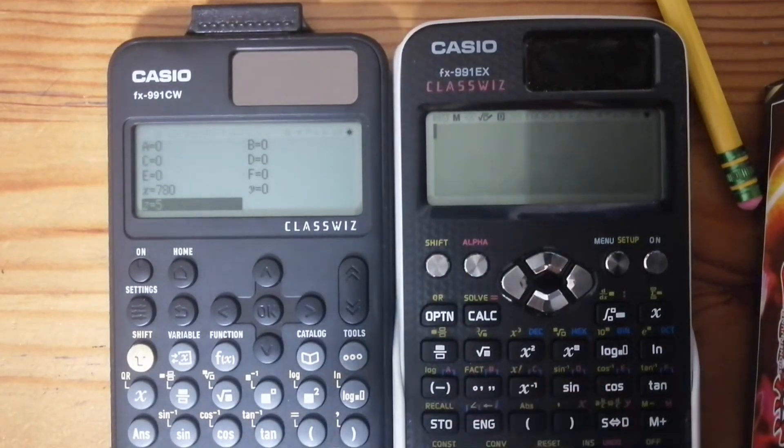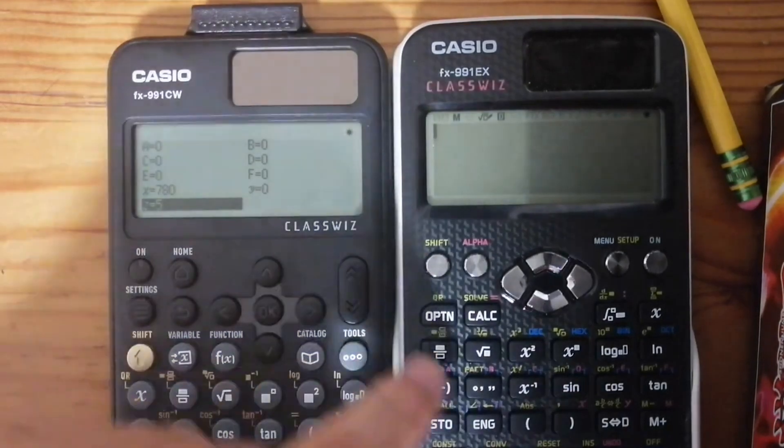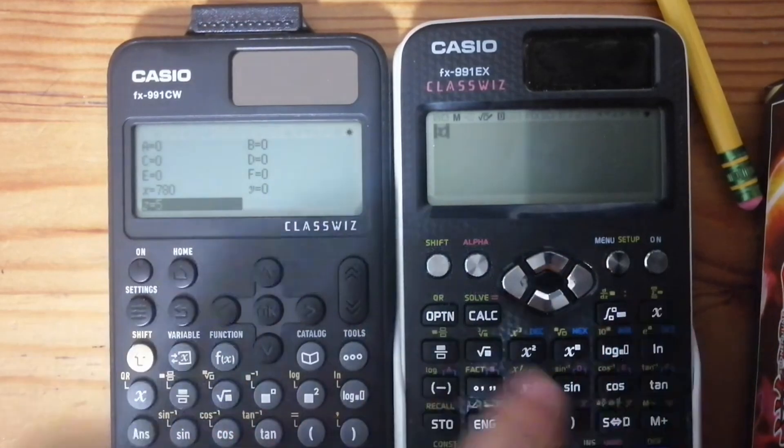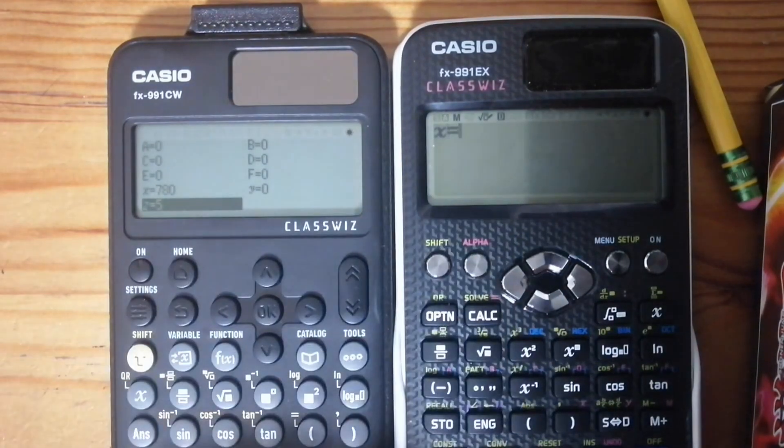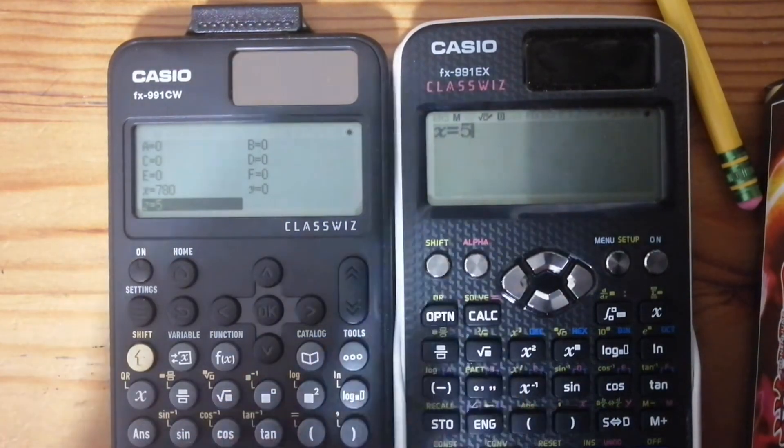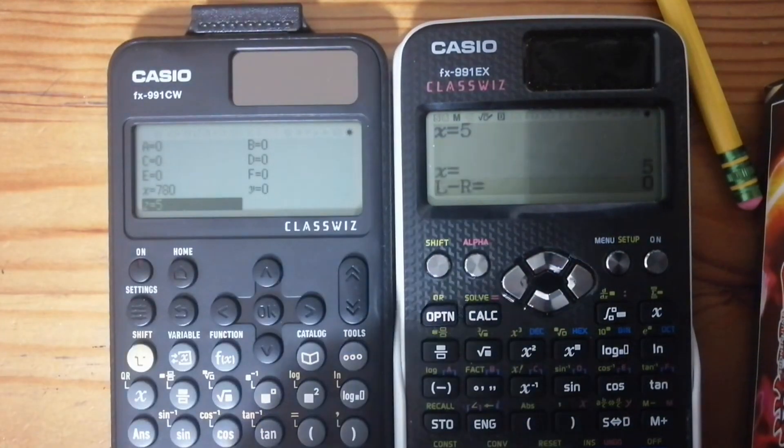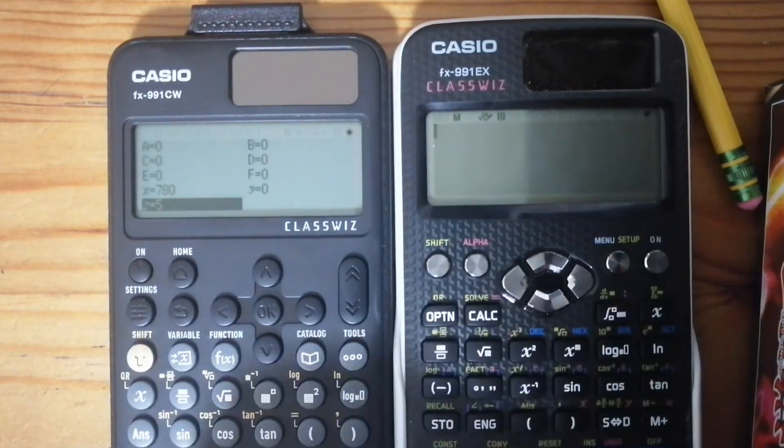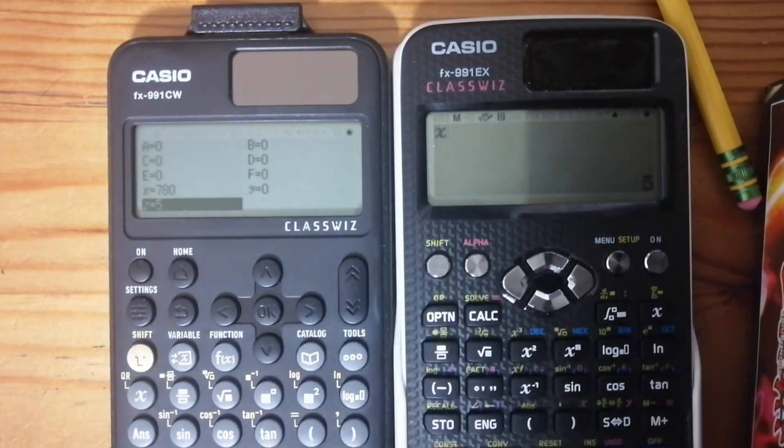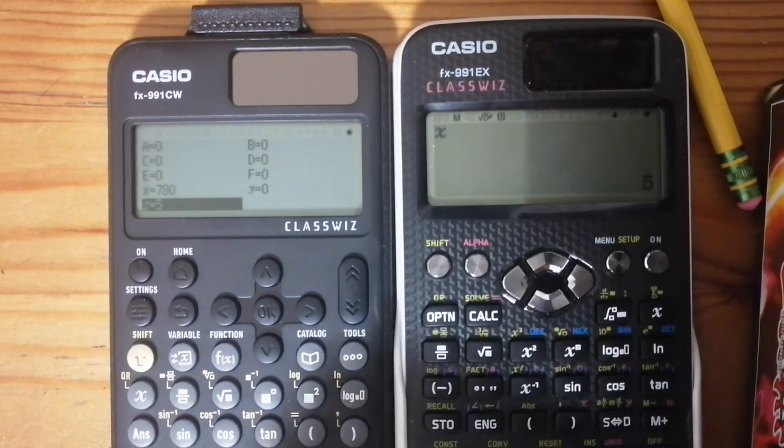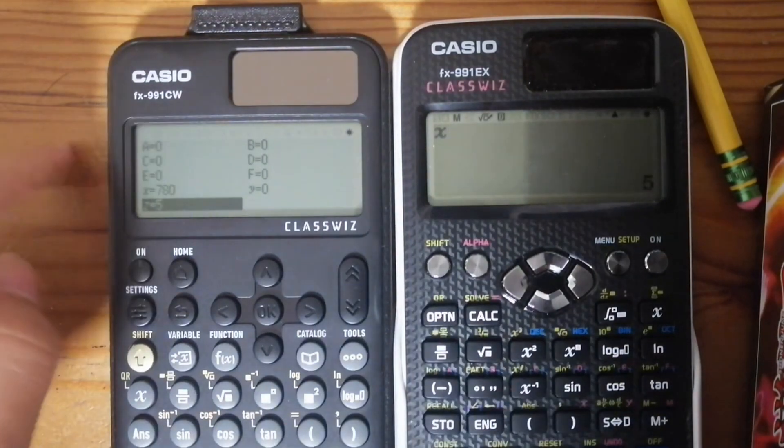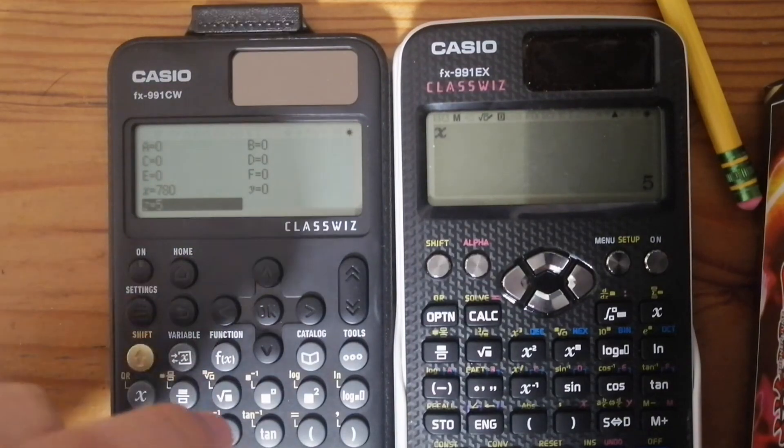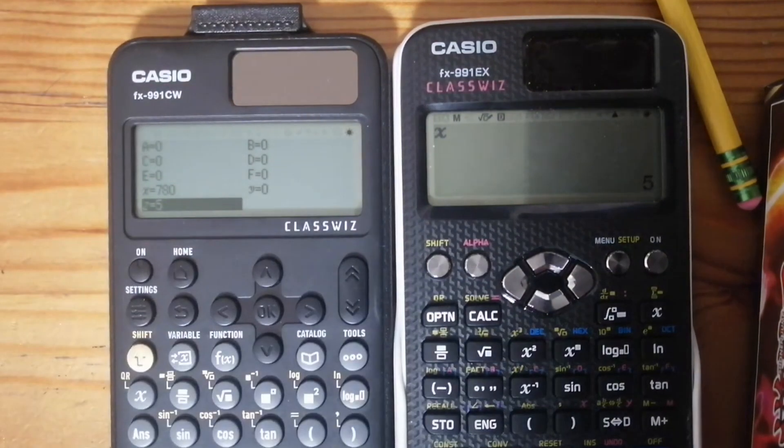On this calculator, technically, it does the same, minus the Z variable. Here, you can set a variable by using the X key, putting in an equation and then forcing your calculator to solve for X, which will then set the value of X to 5. But you can't actually see what the value of it is. You have to press X and then press the equal signs if you want to see what X actually is. So the fact that you actually have a dedicated screen for you to manage variables here on the CW, I find that very useful. It's definitely a pretty nice feature to have.